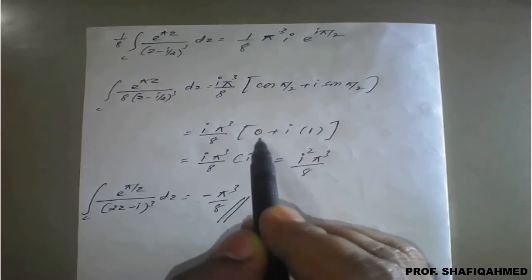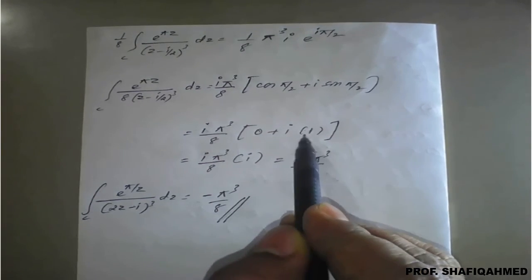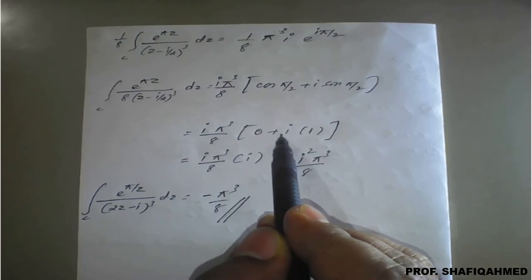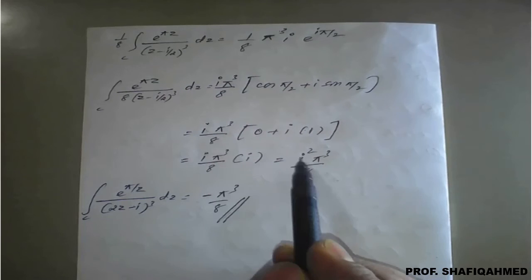But cos pi by 2 is 0 and sin pi by 2 is 1, so 0 plus i will become i. This i and this i will become i square.